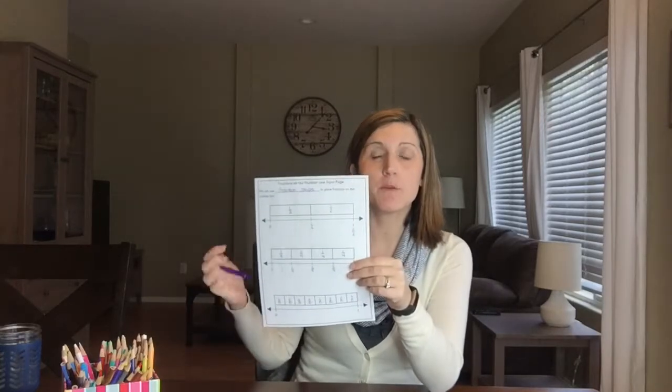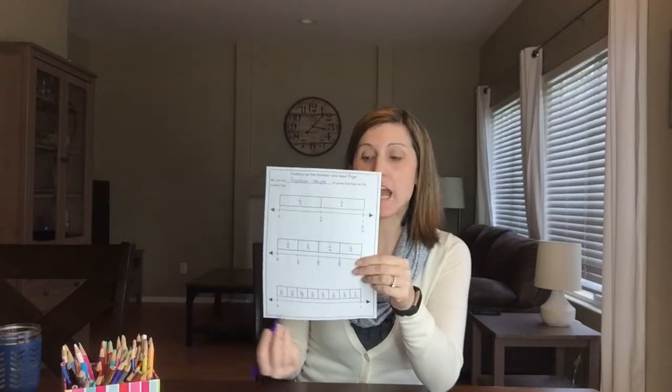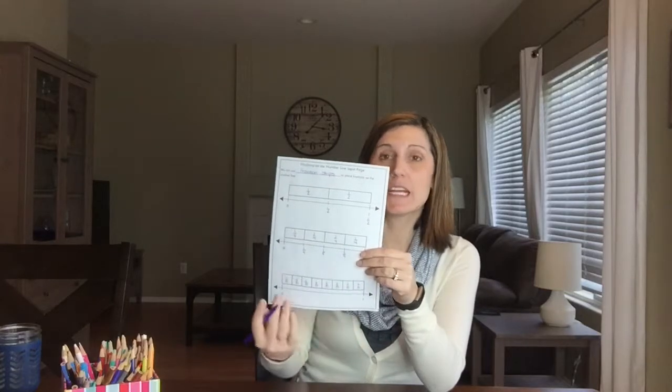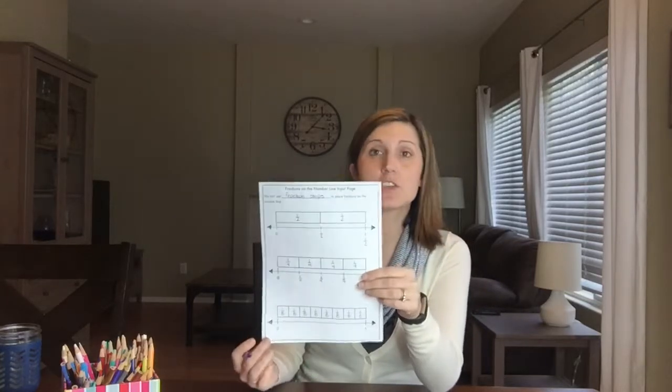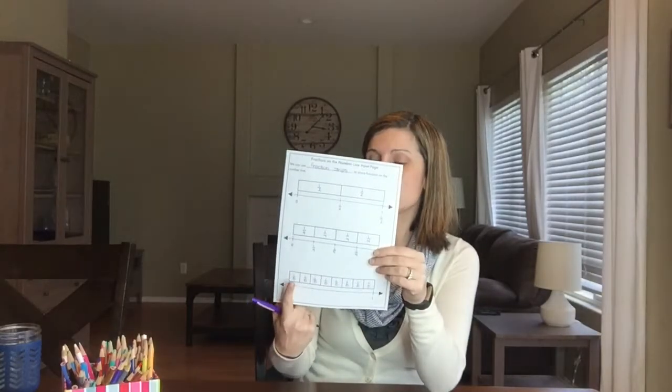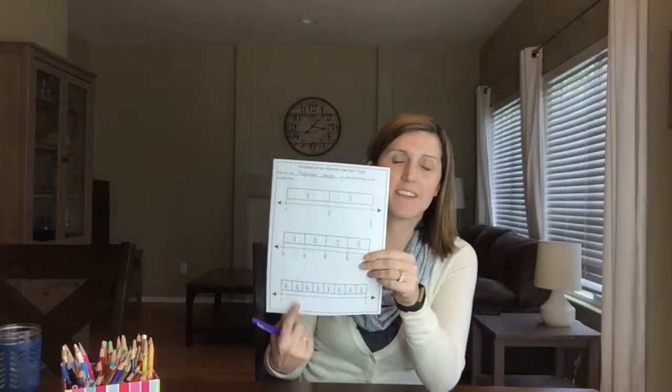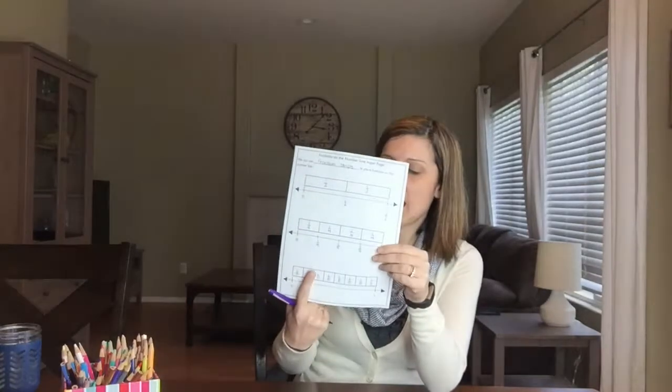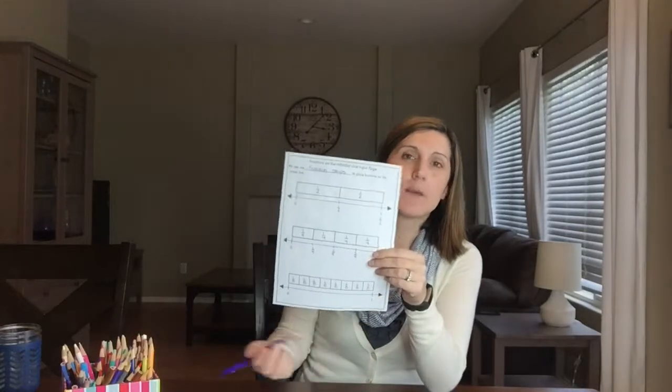The only model we use with fractions that actually counts up is the number line, and that should be true with all numbers. If these were whole numbers, you would still label each piece as eight, not count up one, two, three — because if you broke a piece off, it wouldn't make sense anymore. So count up on the number line. Don't count up on your tape diagram, your number bonds, or your equal groups.